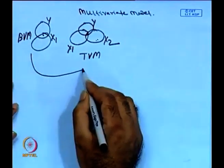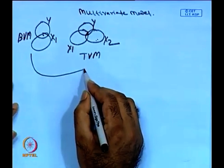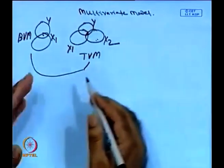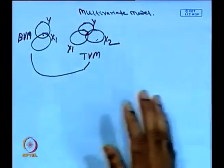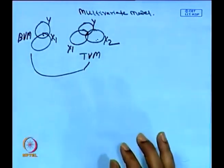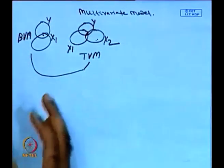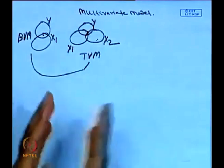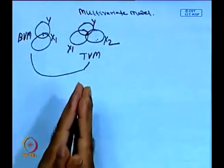Before moving to multivariate econometric modeling, I will highlight the basic setup of this particular problem. One of the standard problems is the multicollinearity issue. What is multicollinearity? Multicollinearity means the existence of a linear relationship among the regressors — that is, among the independent variables in this particular setup. As a result, model accuracy is not okay and the model cannot be best fitted.